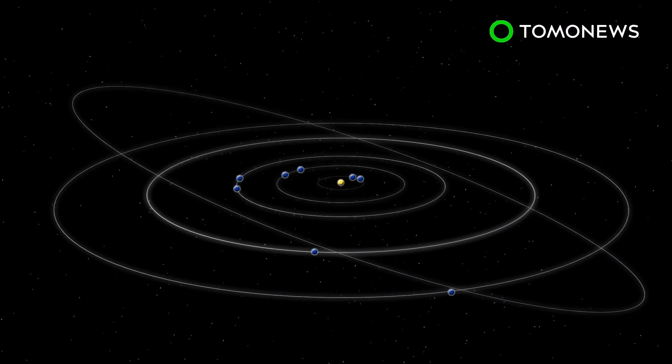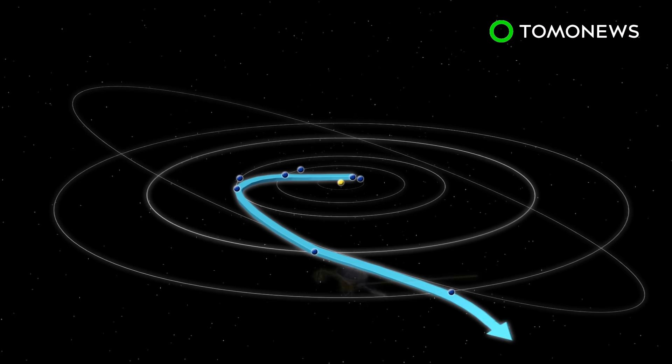Voyager 2 was launched earlier than Voyager 1. It is the only spacecraft to have conducted flybys of Jupiter, Saturn, Uranus, and Neptune.